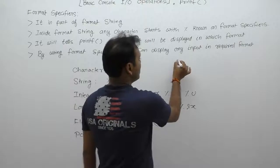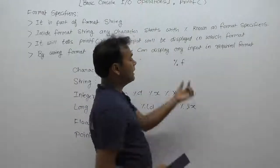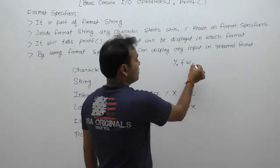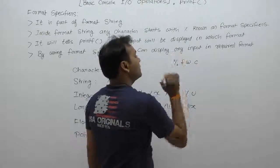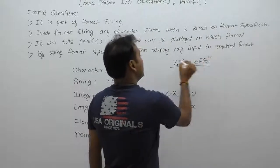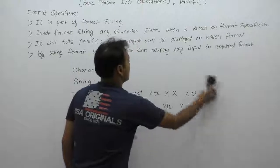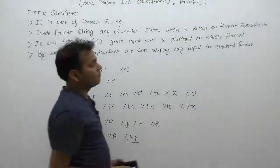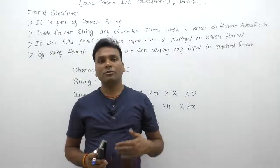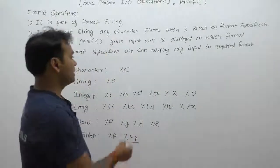Generally, format specifiers follow an exact syntax: some flag — where a flag can be a symbol like plus, minus, or zero — followed by some width specifier, then a dot, then the number of specified characters or digits, and then the format specifier character itself. We will discuss the details of this concept further. This is what is meant by format specifiers. Next, we will discuss each format specifier one by one, starting with %c.